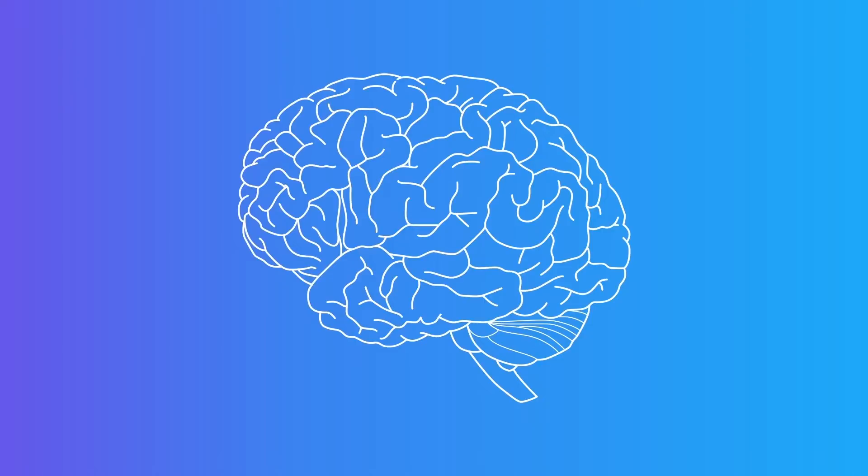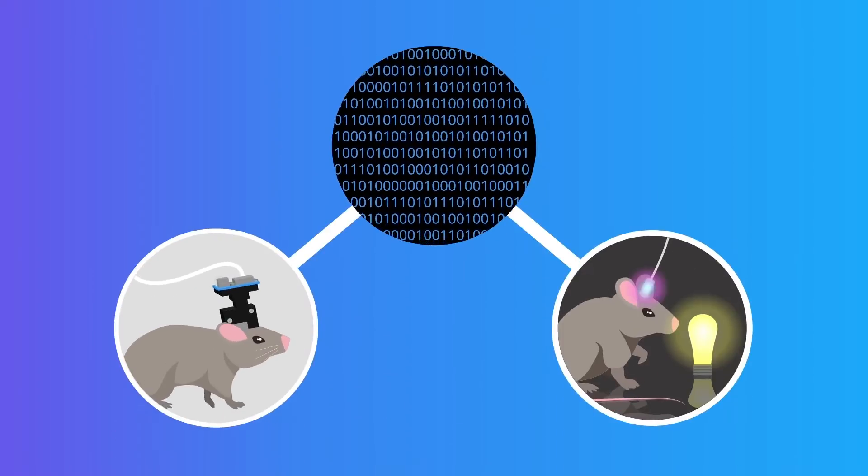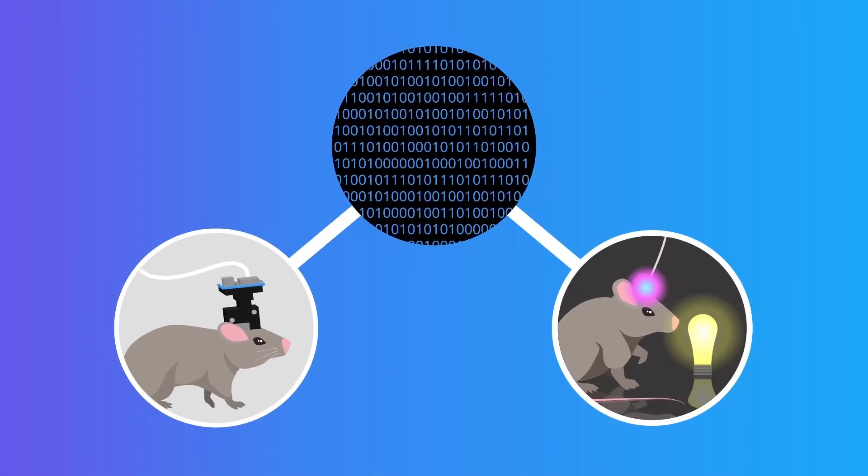To understand how the brain works, scientists record vast amounts of data from arrays of instruments while animal subjects perform various tasks or behave naturally.